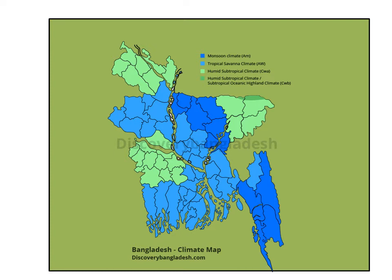Here is a map of Bangladesh. Today we will discuss the climate of Bangladesh. In this map we can see some colors, and those indicate various types of climate in Bangladesh — the monsoon climate, tropical climate, and humid subtropical climate.